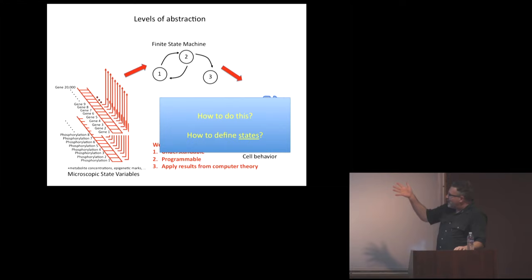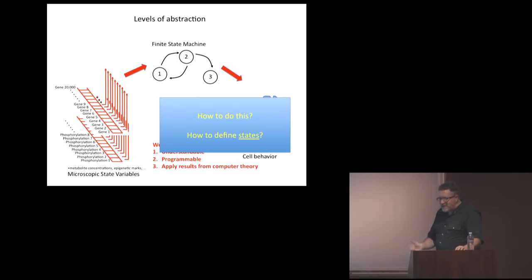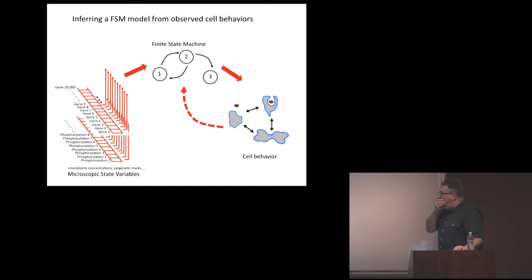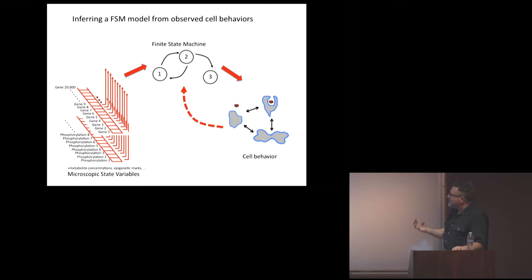The big question is how to represent cell state. I love the idea of a finite state machine representation — the cell is in N different states, and we understand how it transitions between them. The problem is: how do you define the state of a cell? Some people try at the genomic level, looking at clusters of gene expression. One way is to use the behaviors themselves: if cells can only do three or four different things, you could assign each to an output state and examine how the cell moves between those states.